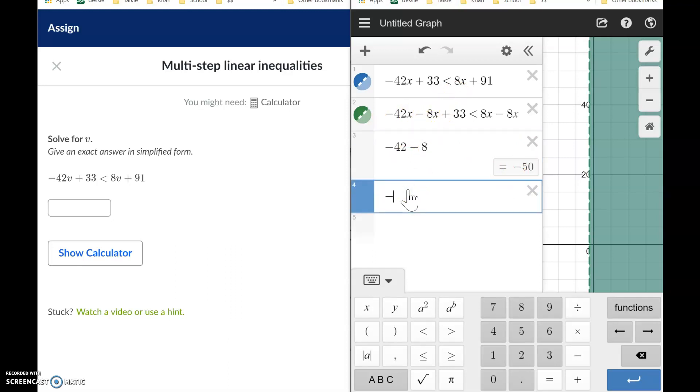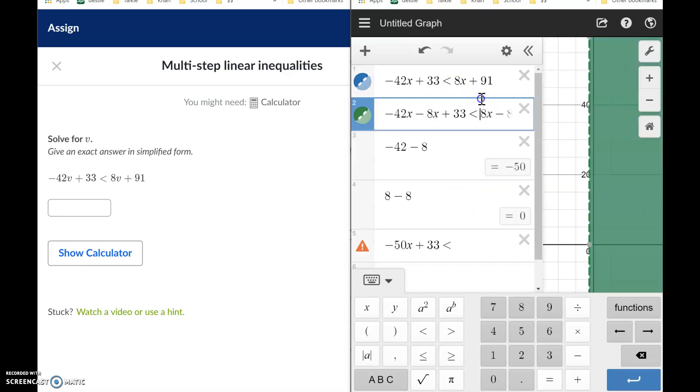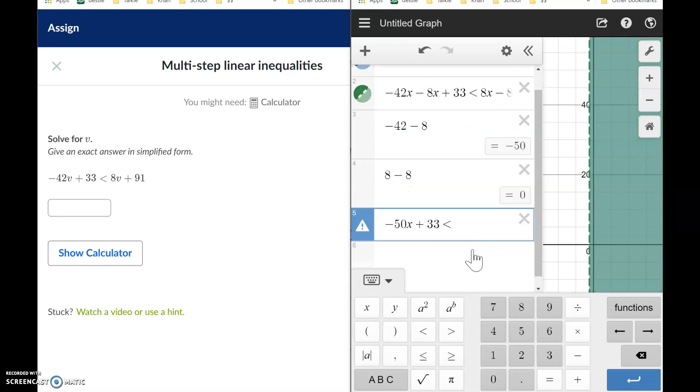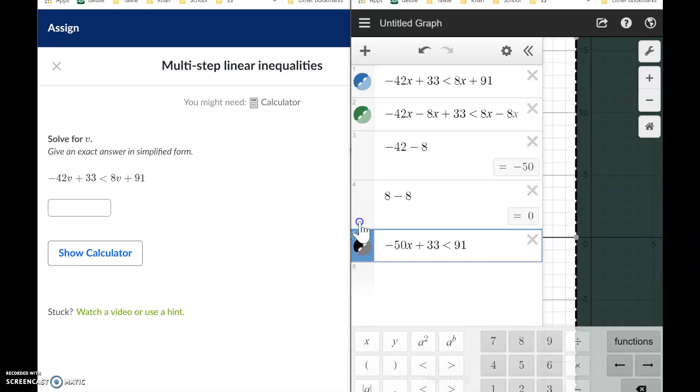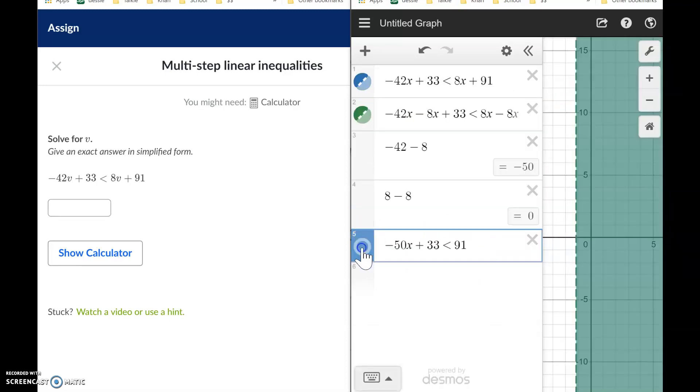So essentially these combined to negative 50. We got negative 50x plus 33 is less than or equal to 8x minus 8x. That's zero, guys. Let's not even write it. That's zero. So what do we have left over here? 91, just 91. Oh my gosh, the shade matches up. You see that? That black shade is perfect. I know I'm doing the work right because it's matching up perfectly with that shade.